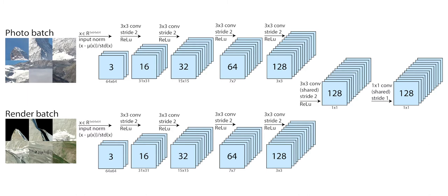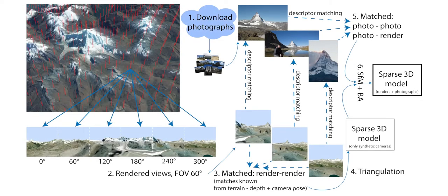To accommodate the inherent differences in appearance between real images and DEMs, we train a cross-domain feature descriptor. However, manual annotation of cross-domain data is tedious. To this end, we propose an automatic method to create aligned data for training, which uses a structure-from-motion guided reconstruction with the terrain model as a reference.